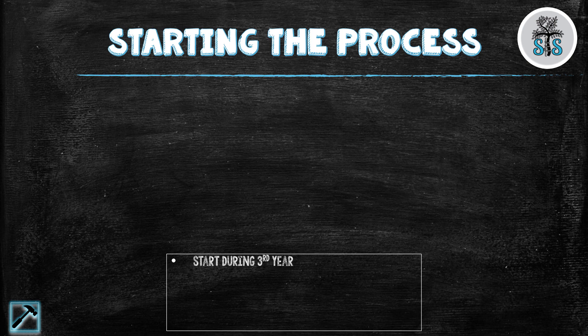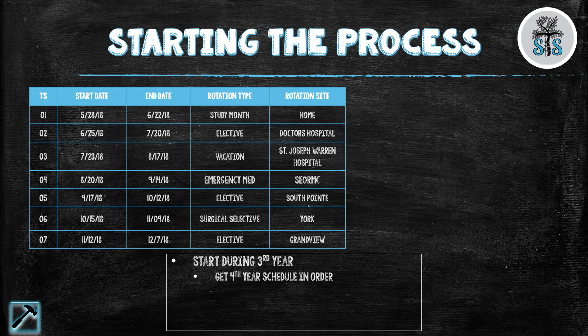Ideally, you want to start this process during your third year. There are going to be many moving parts that need to happen before the beginning of the new year, January 1st. First, you need to set up your fourth year schedule. You want this done and out of the way so you can plan the order of your rotations without having to worry about whether your school is going to approve them. For my school, we were not allowed to have back-to-back elective rotations, and I had an emergency medicine rotation I could not move. So I knew I only had five time slots, and it was going to take some finagling to line them up correctly.